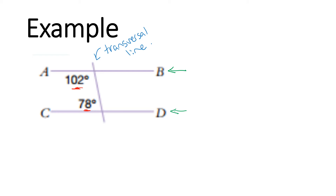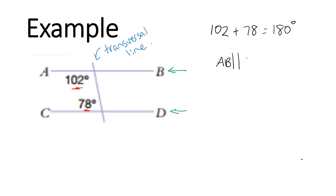What do we know about co-interior angles? They add up to 180 degrees. So let's check: 102 plus 78 equals 180 degrees. So these two angles are co-interior, and we can say that line AB is parallel to line CD. Our reason is co-interior angles.